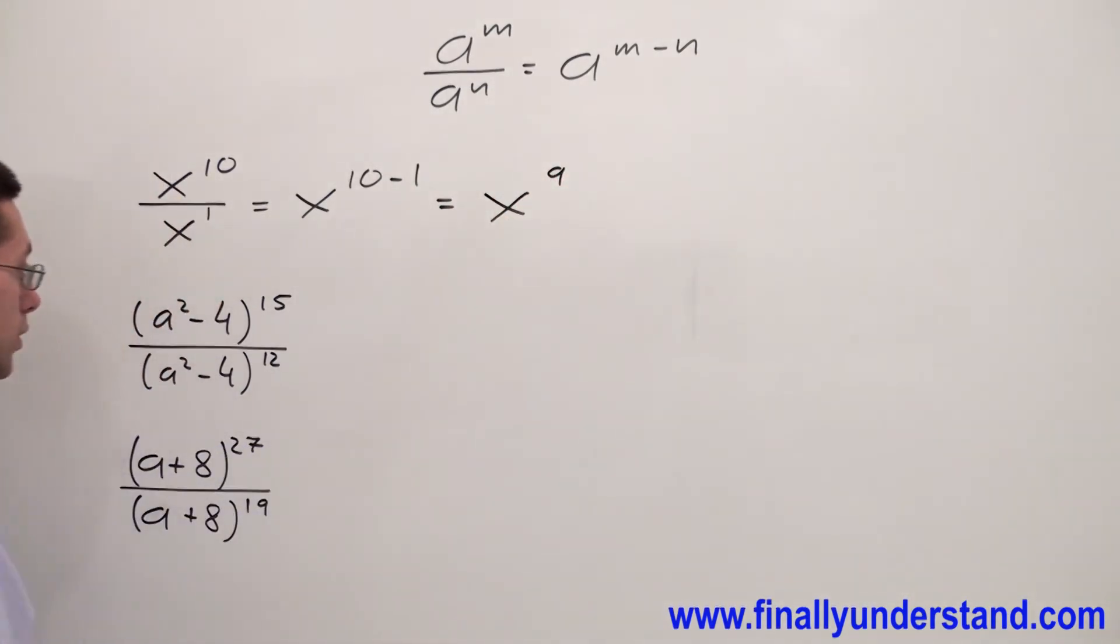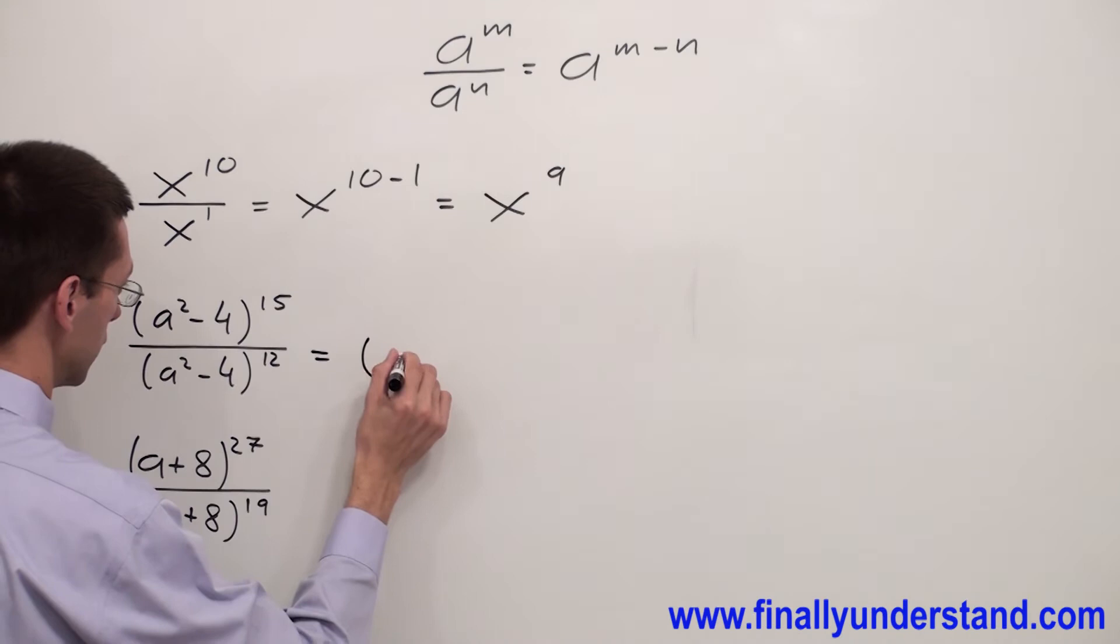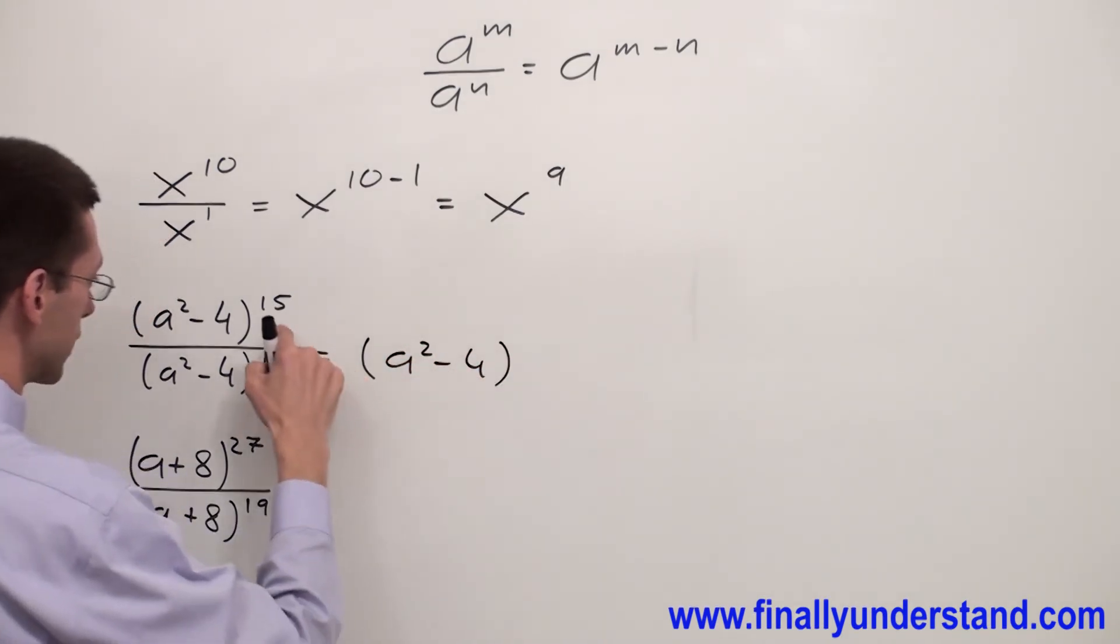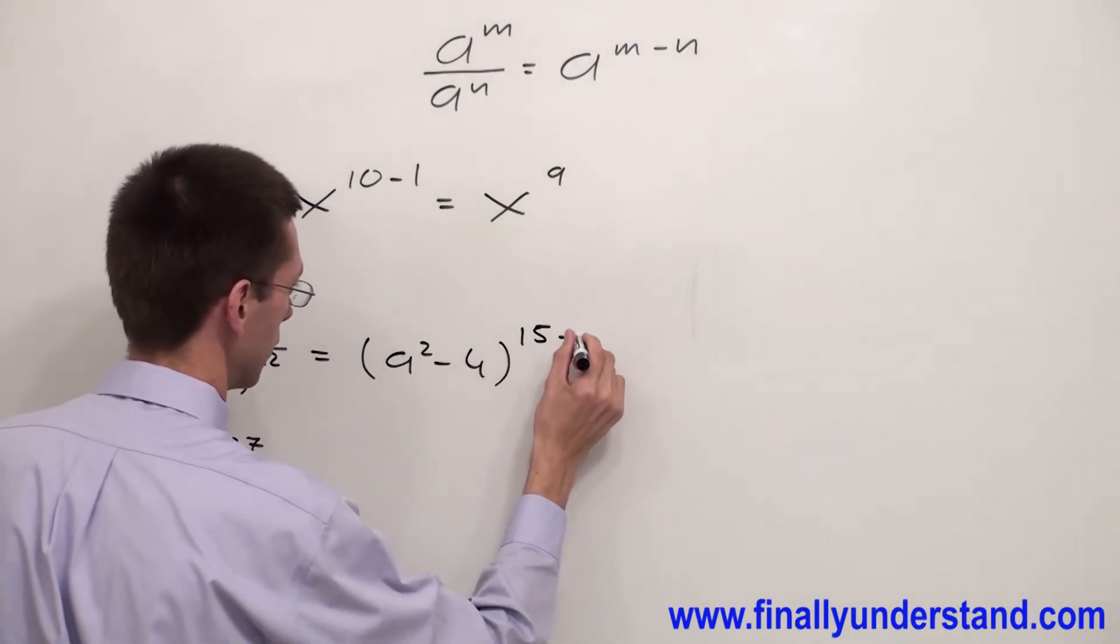Let's take a look at another example. My common base is a² minus 4. I keep this base, so I'm going to have a² minus 4. Next, I subtract the exponents: 15 minus 12.